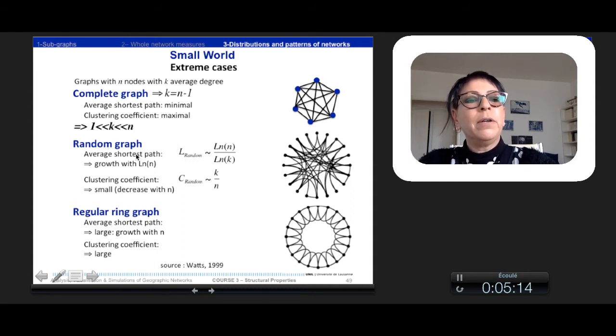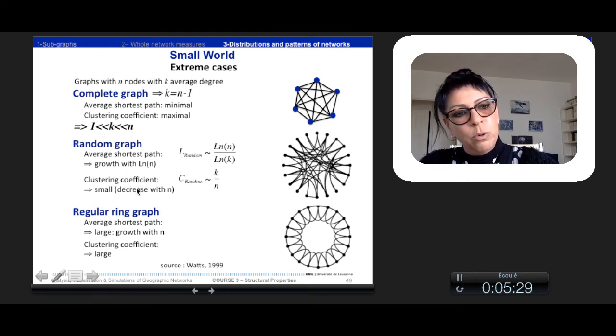The random graph has got a quite low average shortest path because it grows with logarithm of n, but it's got also a quite low, small clustering coefficient because it decreases with n.